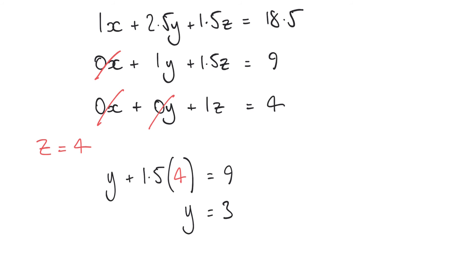And now we know that z equals 4 and we know that y equals 3 we can substitute both of these into the first equation like shown here and we can solve to find that x equals 5. So finally by using Gaussian elimination we found that x equals 5, y equals 3 and z equals 4 in these three simultaneous equations that we were presented with at the start.